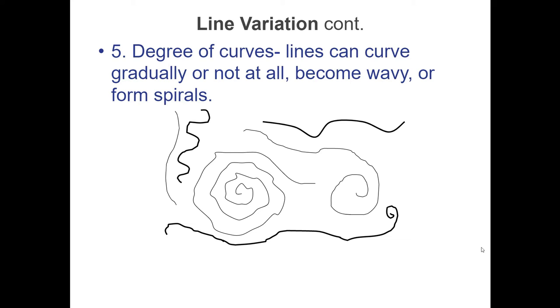Five, the degree of the curve. Lines could be gradual, slightly wavy, or getting tighter and tighter to form spirals. That's the degree of curve we have on our lines.